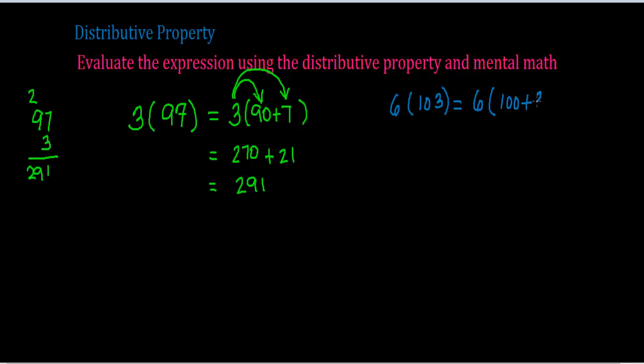And now it's very simple. 6 times 100 is 600. 6 times 3 is 18. 600 plus 18 is 618. You see how fast you can do that in your head if you broke this number up? That's how we use the distributive property.